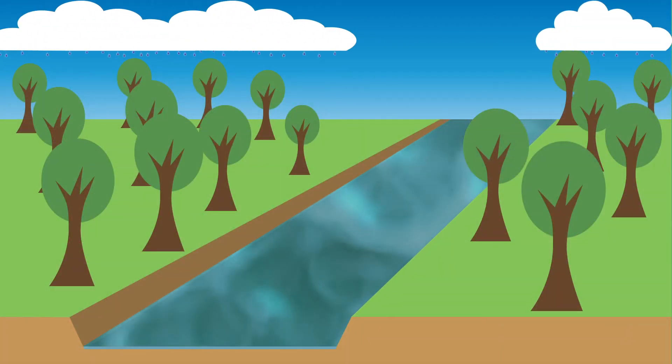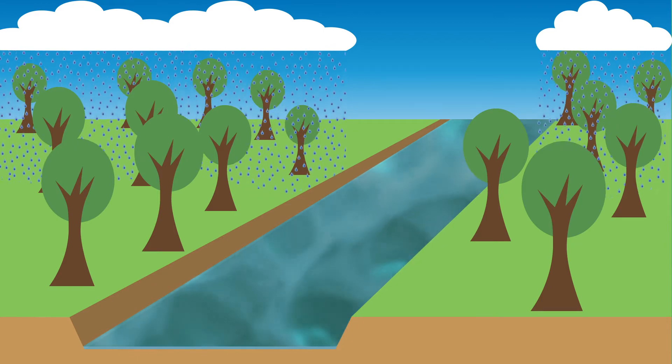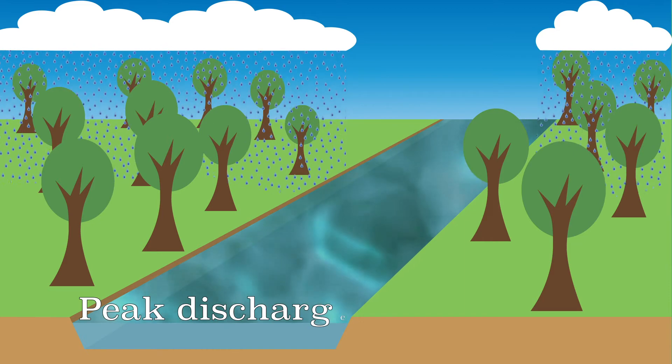After heavy rainfall in a drainage basin, the water is drained to the river. The water level in the river is therefore much higher. The moment when the water discharge is highest is called the peak discharge.